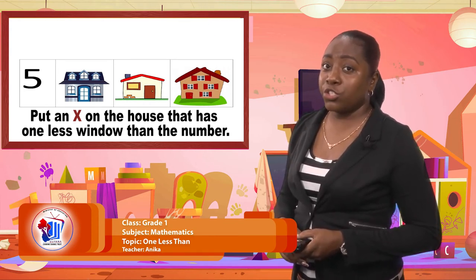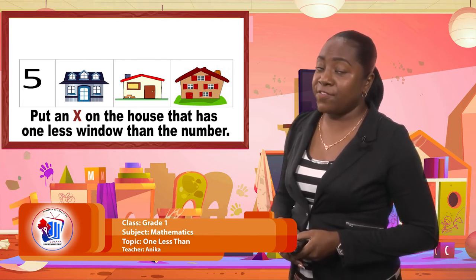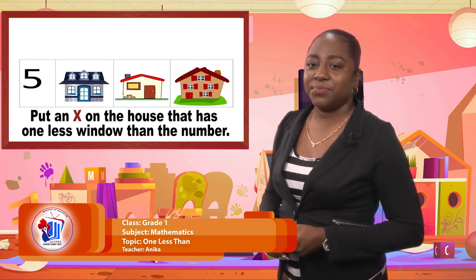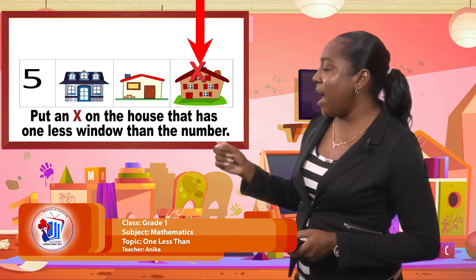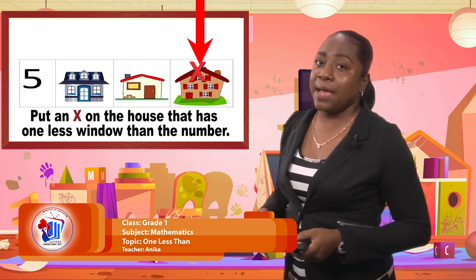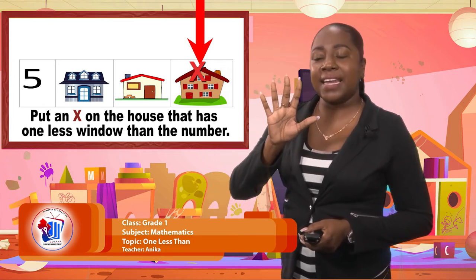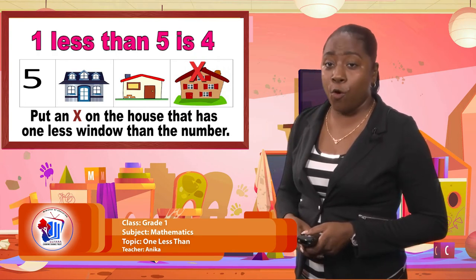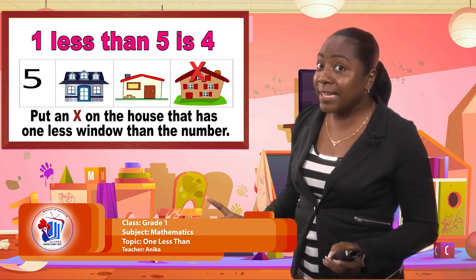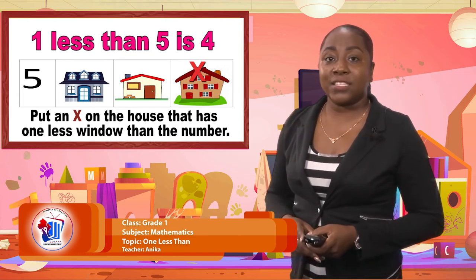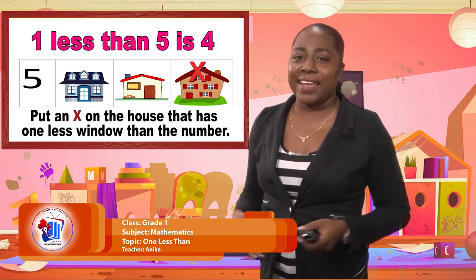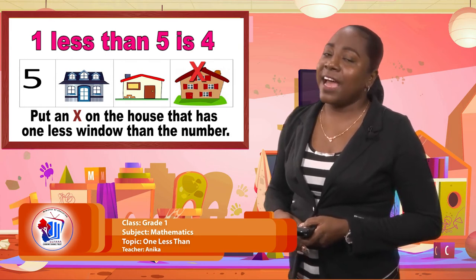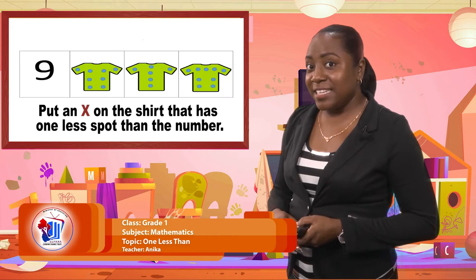Which house shows one less than five windows? One less than five would be the house with four windows. For example, if I put up my five fingers and I put one down, it gives me one less — so the answer is four. If you count correctly, you'll see that the brown house has four windows. So if you have that, go right ahead, put your star. If not, that's okay. You'll keep practicing and soon enough, you're going to learn it.